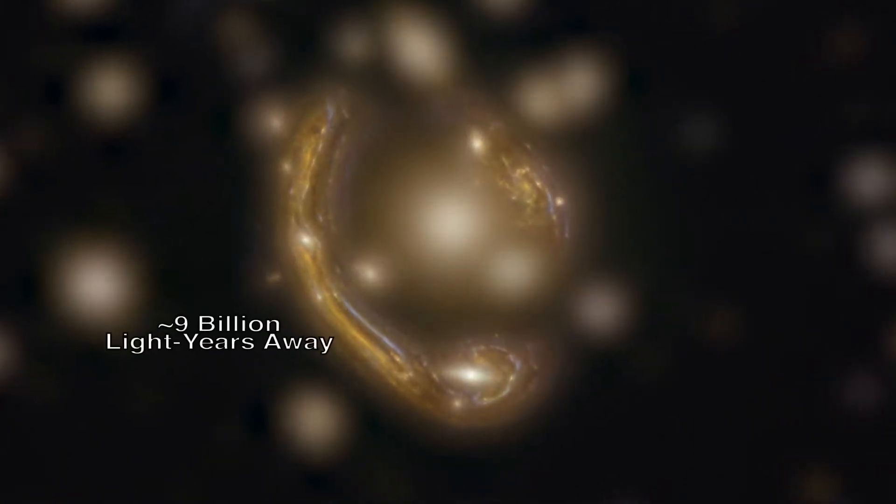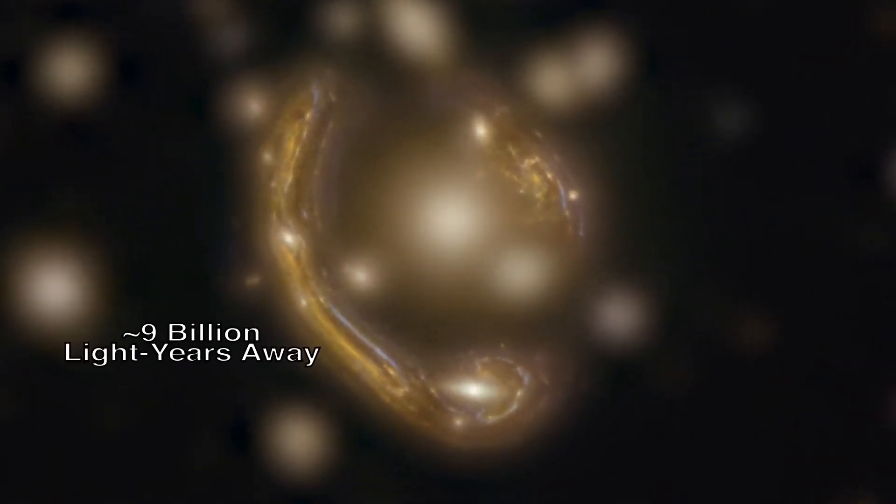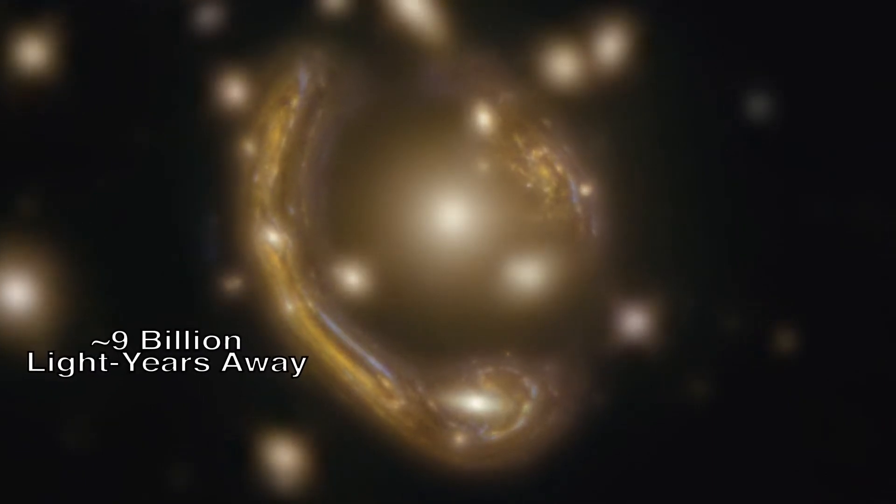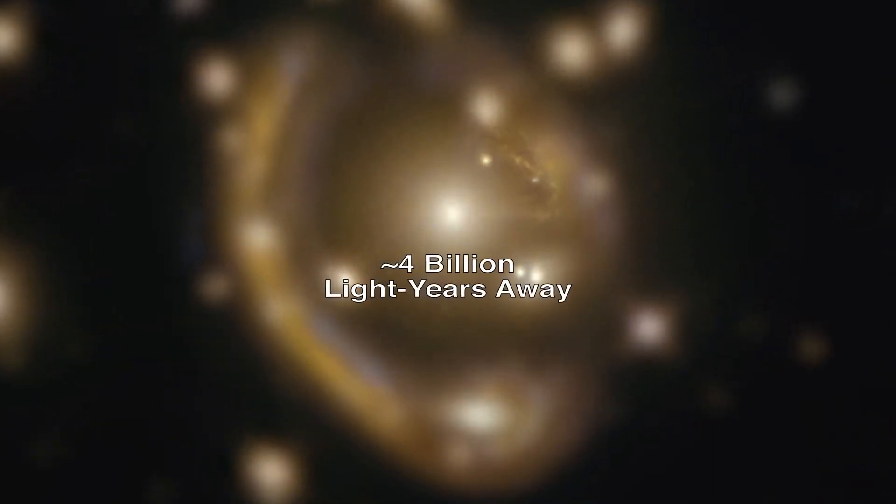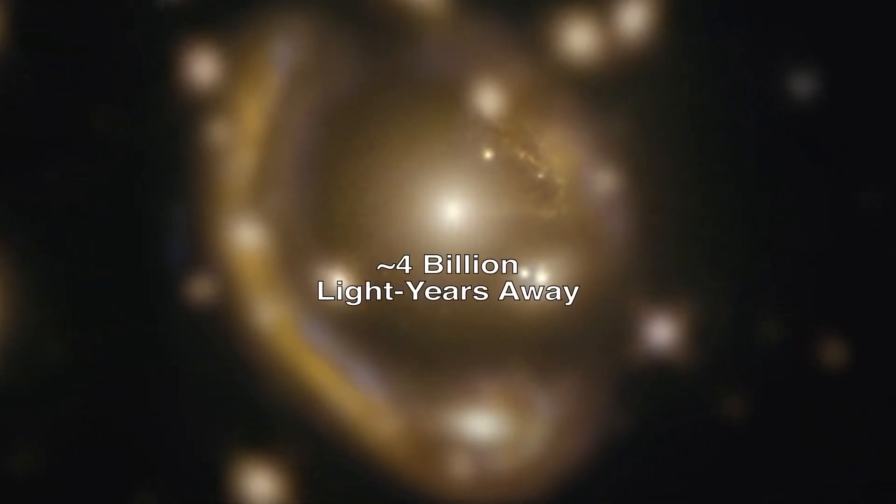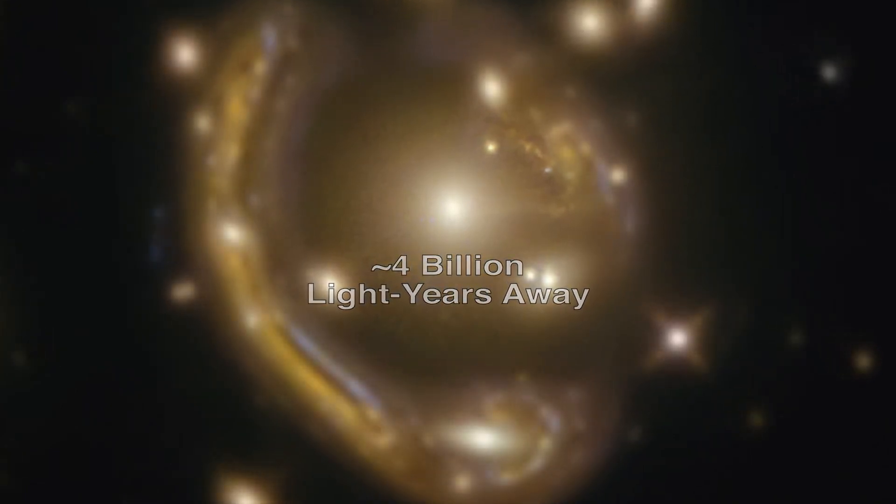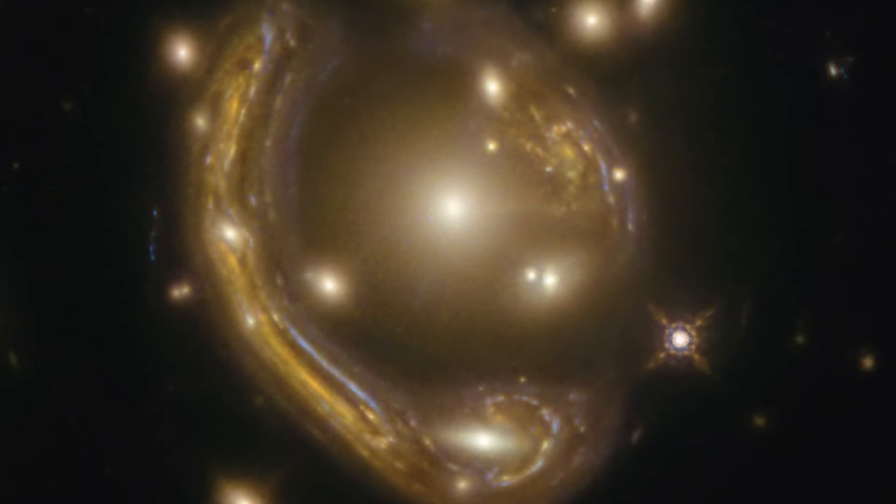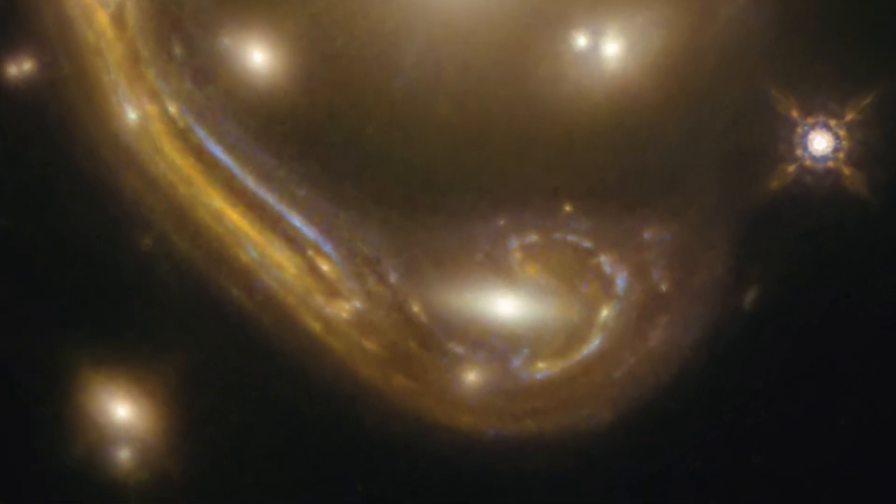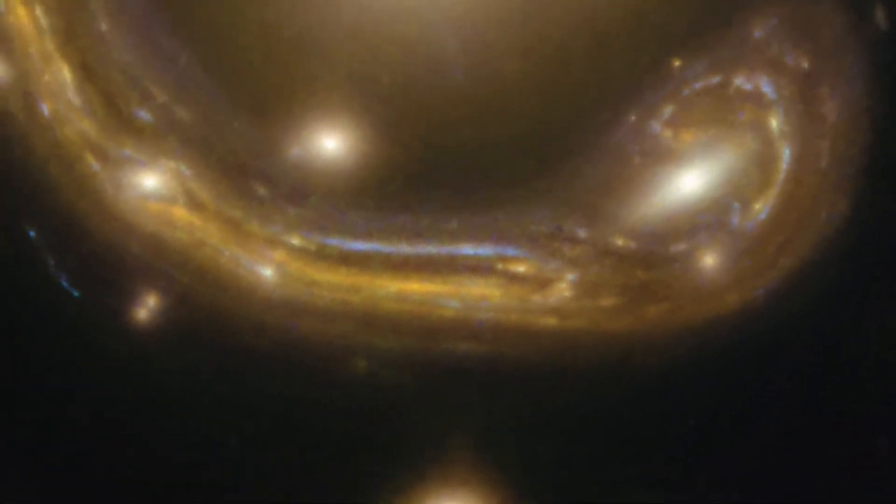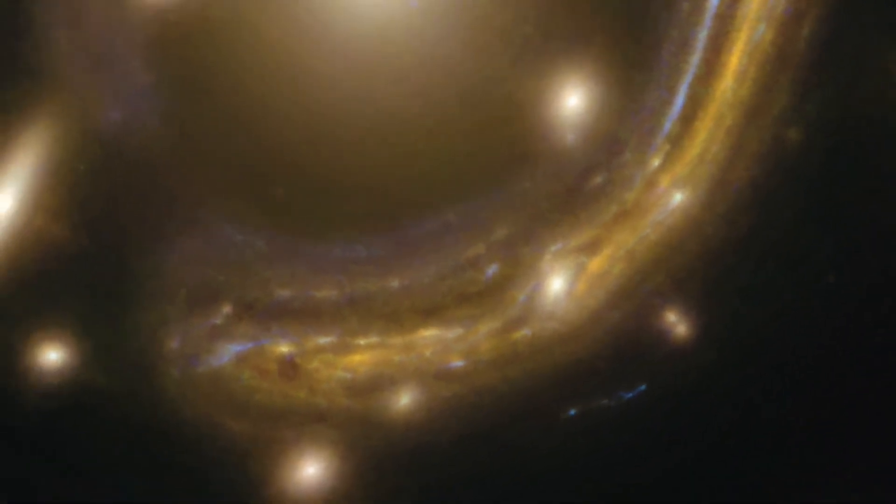In this case, the light from the background galaxy was distorted into the curve we see by the gravity of the galaxy cluster sitting in front of it. The near exact alignment of the background galaxy with the central elliptical galaxy of the cluster, seen in the middle of this image, has warped and magnified the image of the background galaxy around itself into an almost perfect ring.